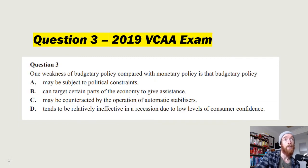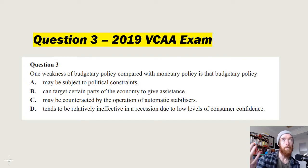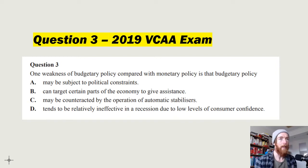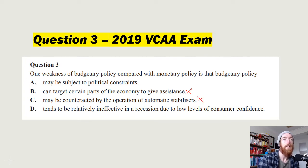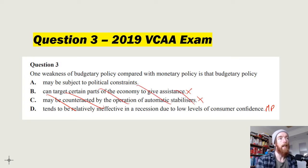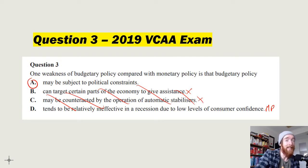Question 2: 'One weakness of budgetary policy compared with monetary policy is that budgetary policy...' Options: A — may be subject to political constraints; B — can target certain parts of the economy (not a weakness, that's a strength); C — may be counteracted by automatic stabilizers (also a strength); D — tends to be relatively ineffective in a recession due to low consumer confidence (that's about monetary policy, not budgetary). So we rule out B, C, and D, and the answer is A.